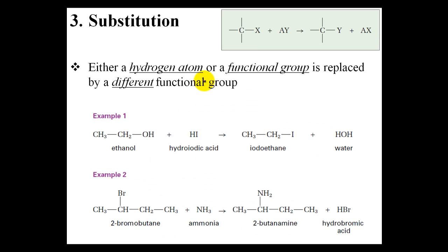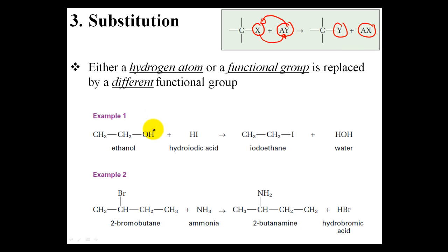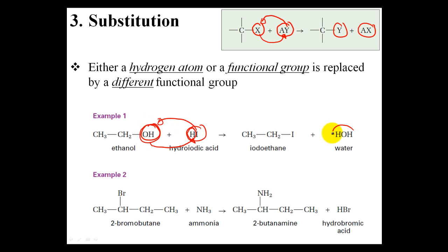The last type of reaction we'll be looking at is known as a substitution reaction. Substitution reactions are very similar to displacement reactions in that either a hydrogen atom or a functional group is being replaced by a different functional group. So here I have a molecule AY and functional group X — the Y bumps out the X and replaces it. So here we have ethanol where the functional group is OH. With hydroiodic acid, the OH group is replaced or substituted by iodine, giving us iodoethane, while the H and OH combine to form water.